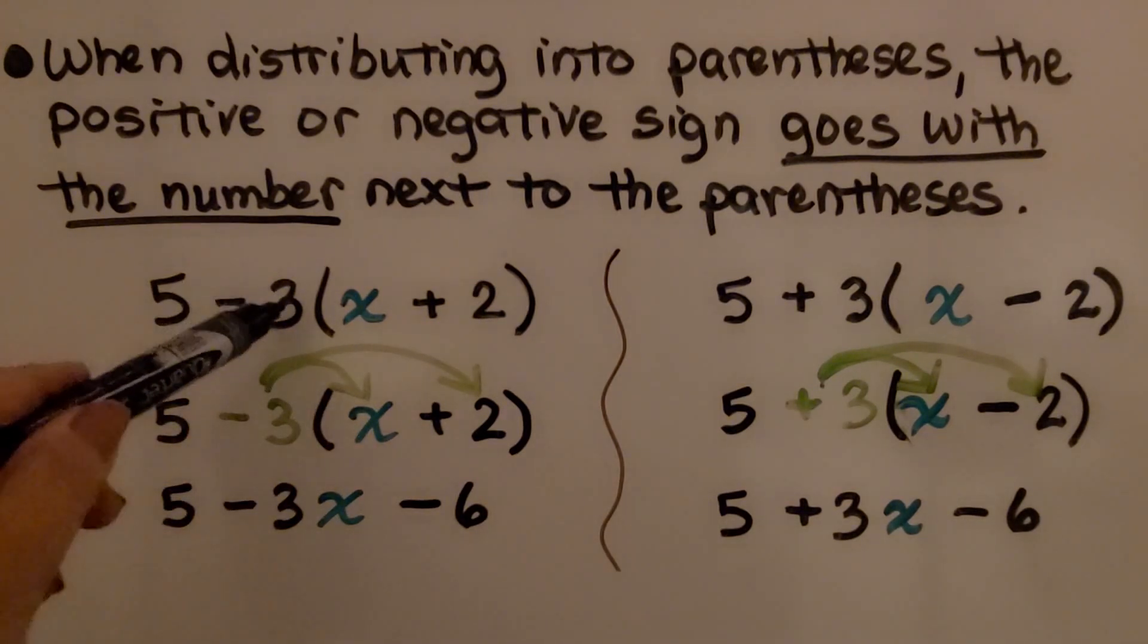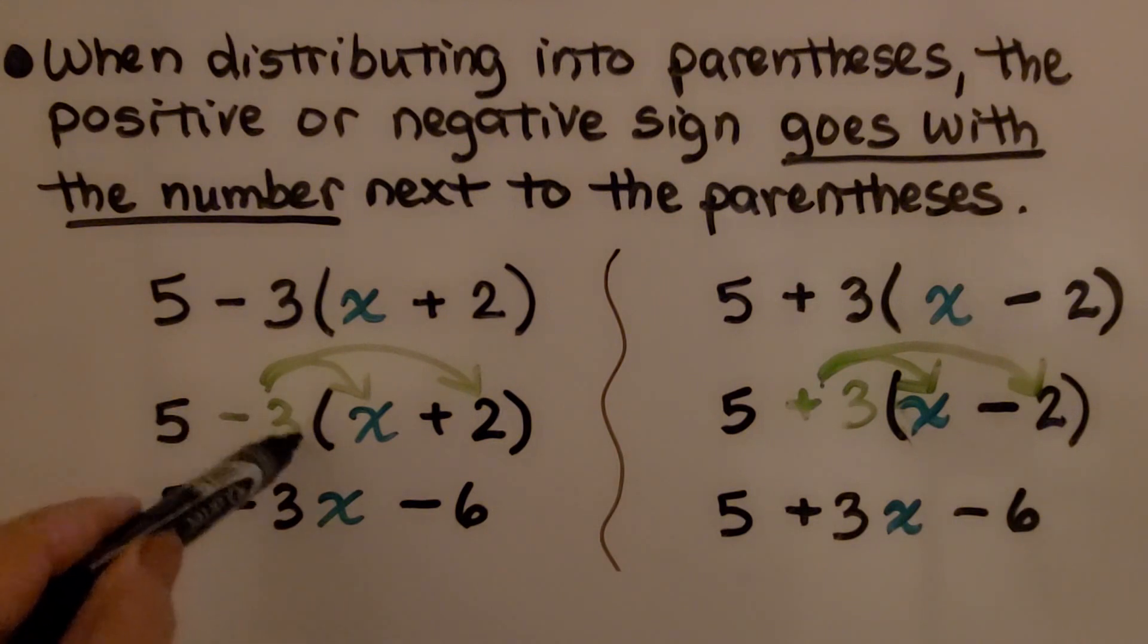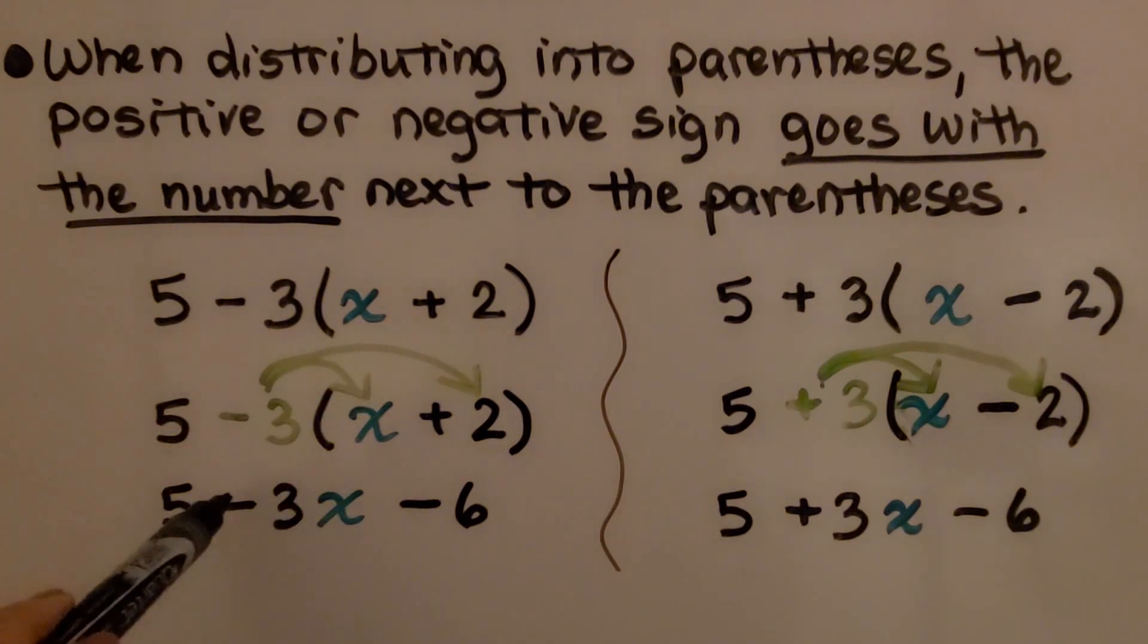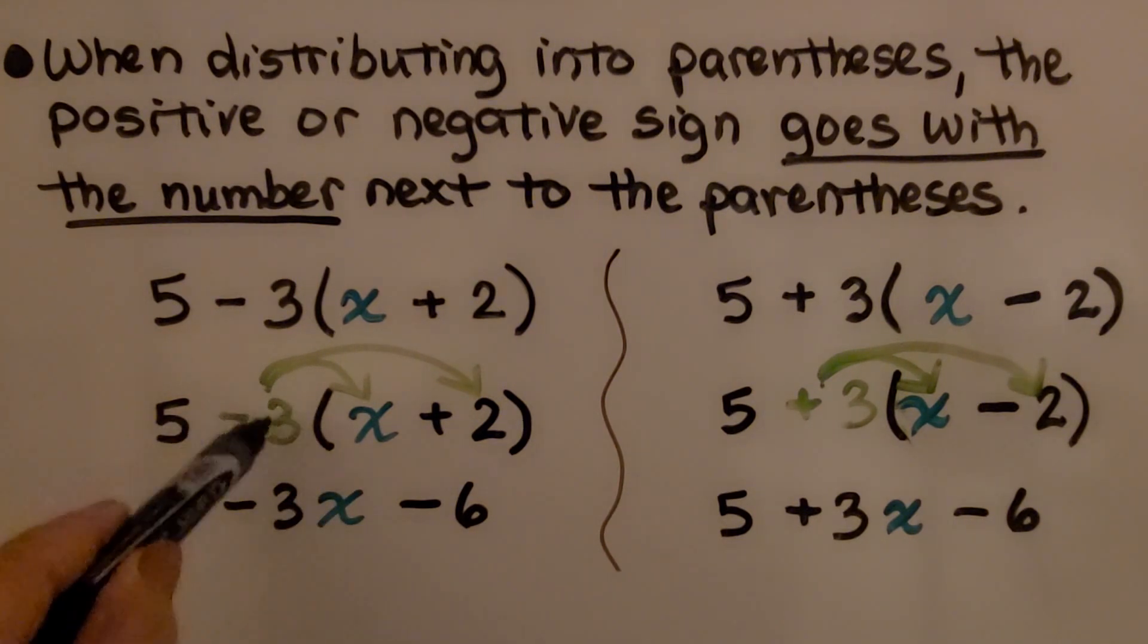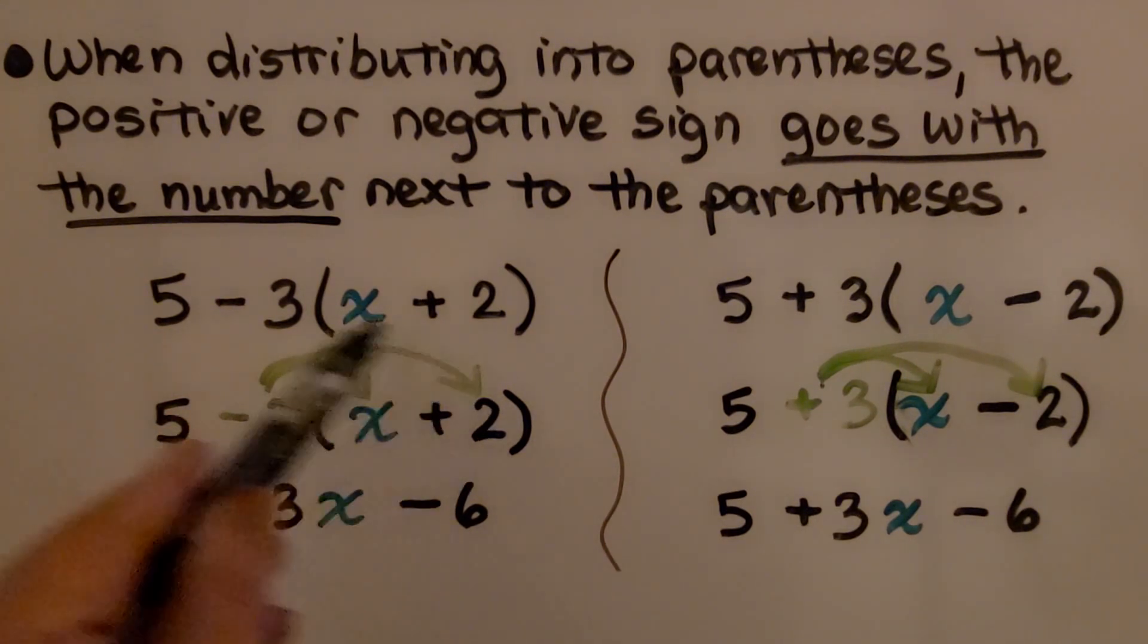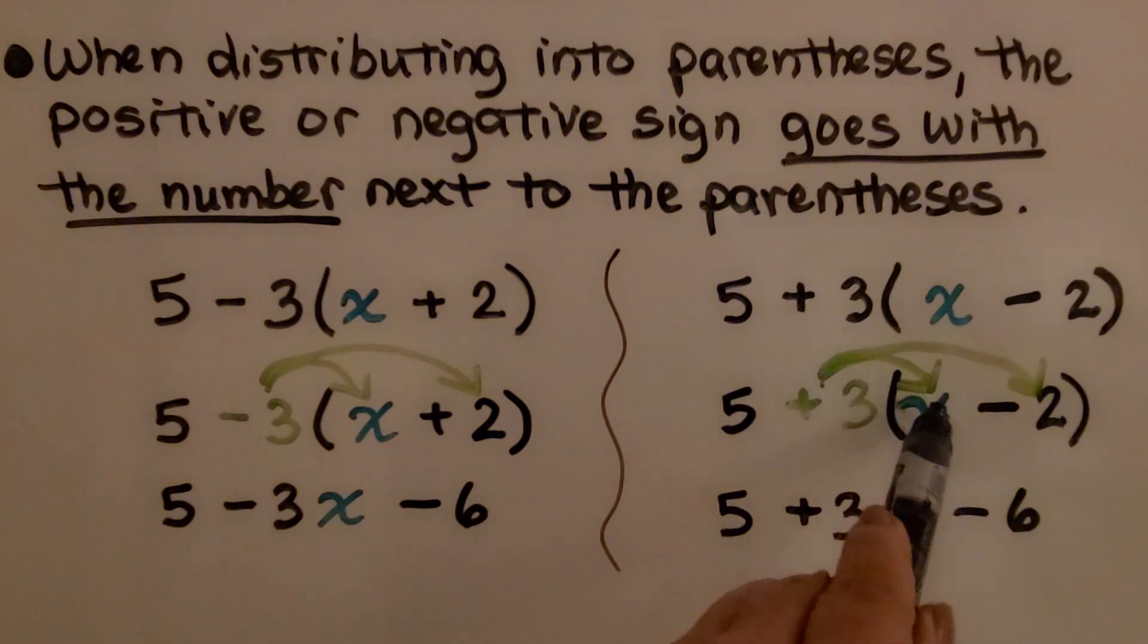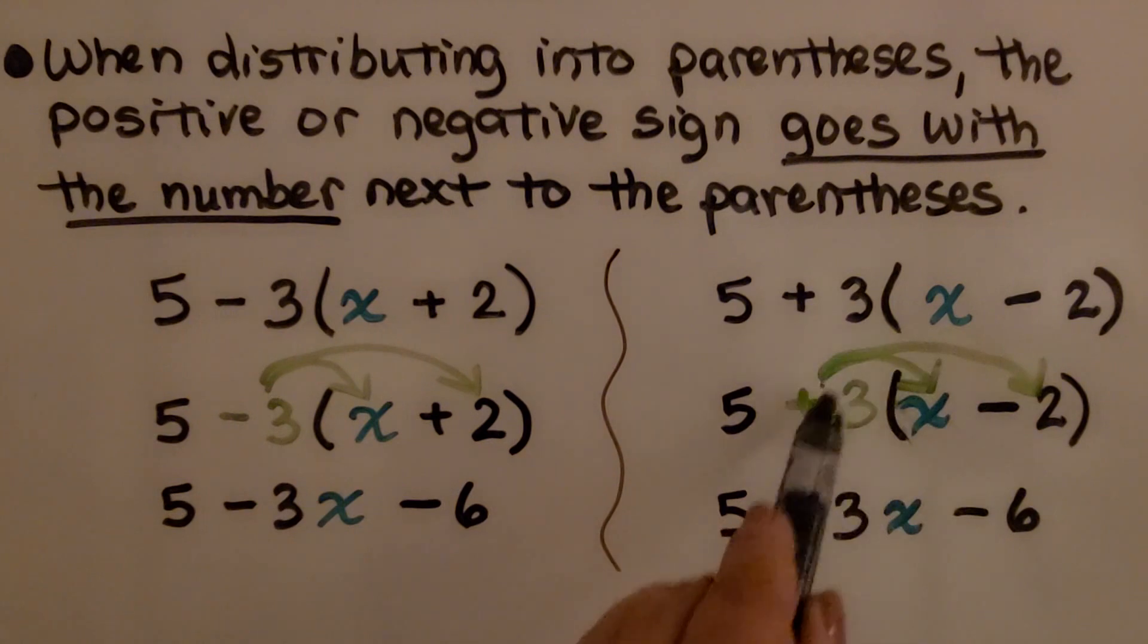So we have 5 minus 3 times x plus 2. We take this entire minus 3 and distribute it to the x, so we have minus 3x. And we take this minus 3 and distribute it to the 2. We have negative 3 times a positive 2, which gives us negative 6. The sign goes with it to this first term and to the second term. We use the rules for multiplying integers—different signs, then it's going to be negative. If they're like signs, it's going to be positive.